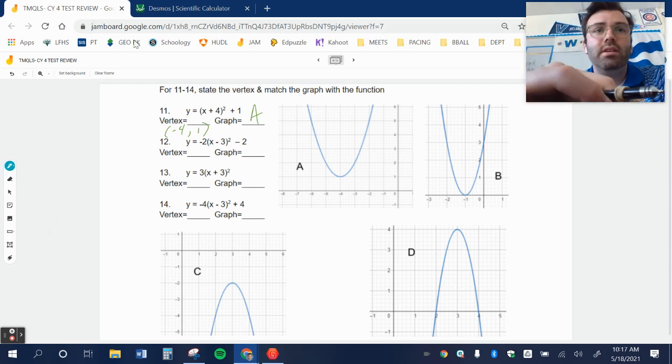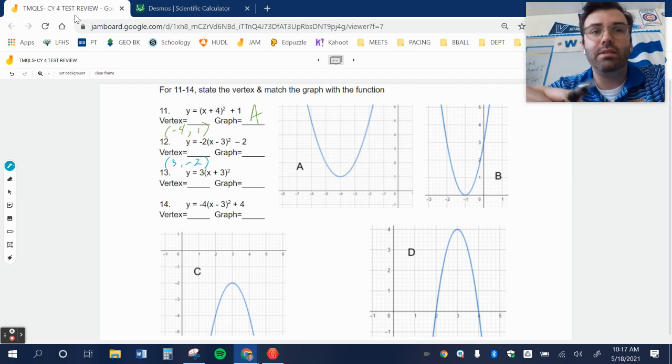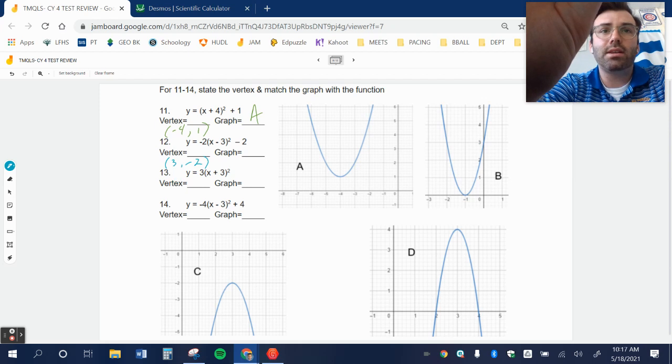Let's look at number twelve. Inside is the opposite, so I have 3. Outside stays the same, comma negative 2. Three comma negative 2 looks like this one down here, and it's opening down since that negative. So that is correct. This would be C.